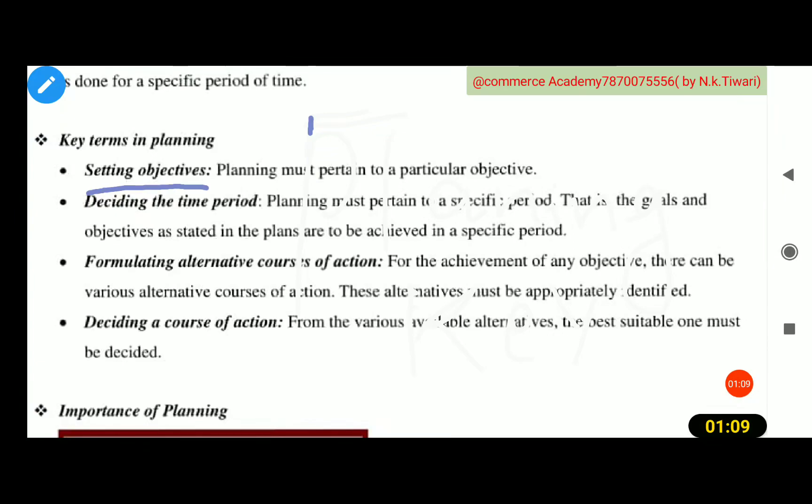The next is deciding the time period. All works have a certain time to finish it. If you have no knowledge of how much time will be involved in the work, you can never be certain to finish it on time. So it must be noted that all works have to finish at a time. So the second keyword is deciding the time. Just like the government makes a five-year planning and they know the work will finish in five years. You are reading class 12; you will finish class 12 after two years. Each and every work has a fixed time, so if you want to do the work, you must set a time to achieve the goal.